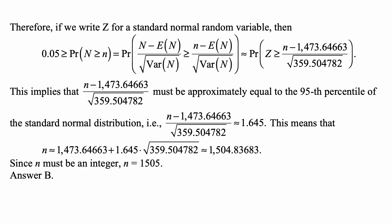Therefore, if we write Z for a standard normal random variable, we need 0.05 to be greater than or equal to the probability that N is greater than or equal to n. Standardizing, this is the probability that Z is greater than or equal to n minus the mean over the square root of the variance. This implies that the right-hand side must equal the 95th percentile of the standard normal distribution, which is 1.645. So n is approximately 1,473.6463 plus 1.645 times the square root of 359.504782, which equals approximately 1,504.83683.